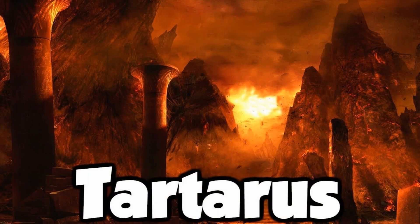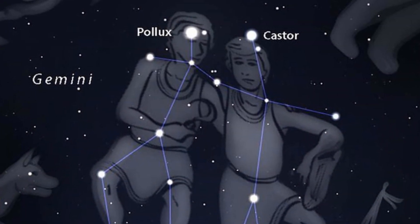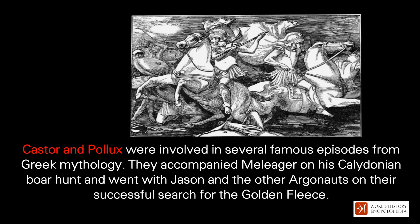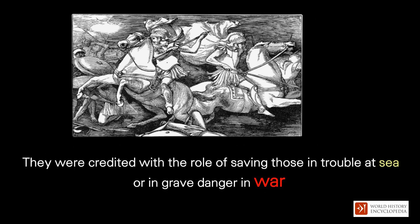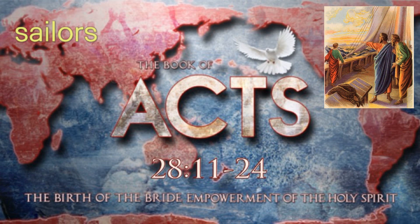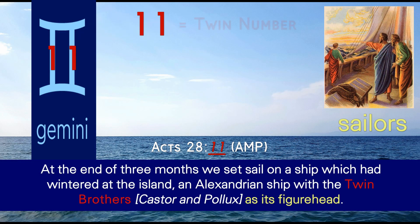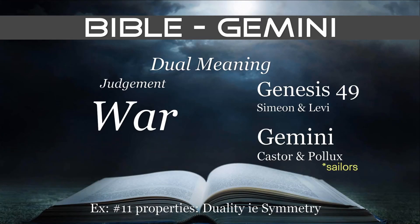Coming back to Gemini — from a Greek perspective, Gemini was associated with Castor and Pollux, who were known for warfare as very skilled fighters, famously depicted in the story of Jason and the Argonauts, which associated Castor and Pollux with sailors. In Acts 28:11, Paul is on his way to Rome, hops on an Alexandrian ship, and it states the boat had figureheads of Castor and Pollux — connecting the constellation of Gemini, indirectly, to war, similar to Genesis 49.